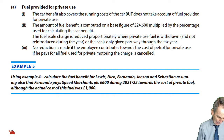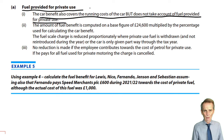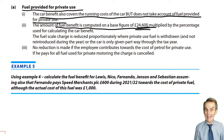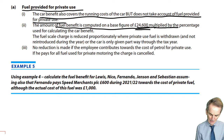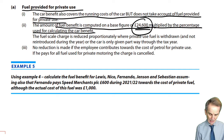The car benefit covers the running costs of the car but does not include fuel. Fuel provided for private use creates an assessment. The amount of fuel benefit is computed on a base figure of £24,600 — available on your rates and allowances page — multiplied by the same percentage used for calculating the car benefit.